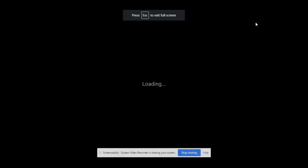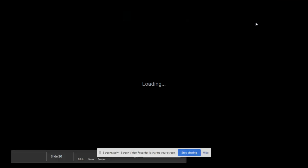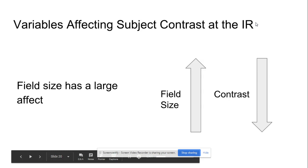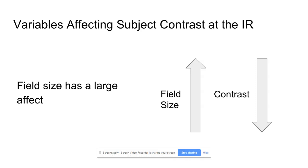Hello, everyone. This is going to be part two of lecture three. So part two, lecture three, we're just continuing where we left off, and we're talking about some of the variables that affect subject contrast at the IR. So when it comes to field size, we're talking about collimation.